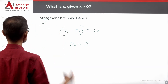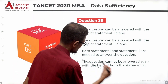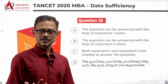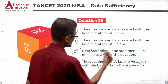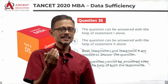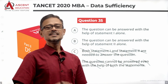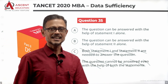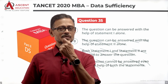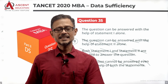So Statement 1 alone is sufficient. Looking at the answer options, since Statement 1 alone is sufficient, we can immediately eliminate answer options B, C, and D. Mark A as the answer.